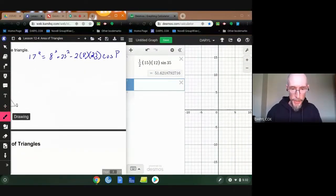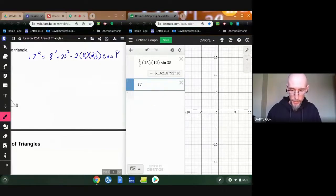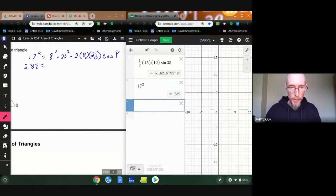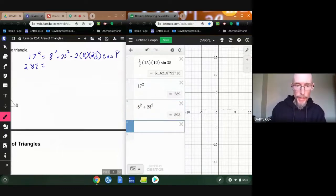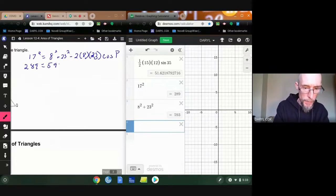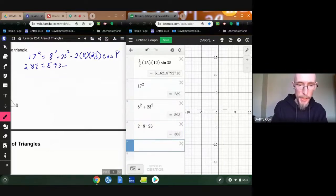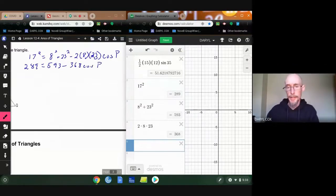And let's get some calculations. Okay. So 17 squared is pretty easy. 17 squared, 289. So I've got 289. And 8 squared plus 23 squared. So 8 squared plus 23 squared is 593. Now 2 times 8 times 23 gives me 368 cosine of P. I tell you what, you finish this off and tell me what the angle is.